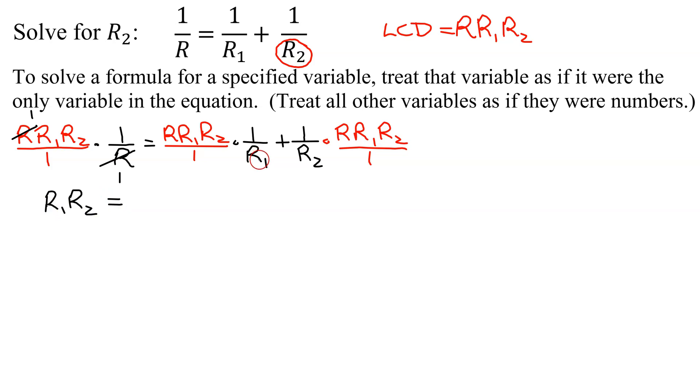That equals, in this next term, R1 reduces with this R1. And I get left with R times R2, plus, in the last term, R2 reduces, and I get left with R times R1.